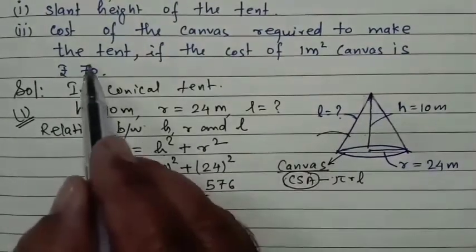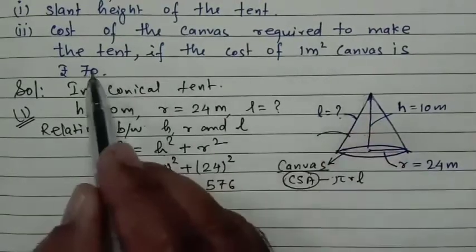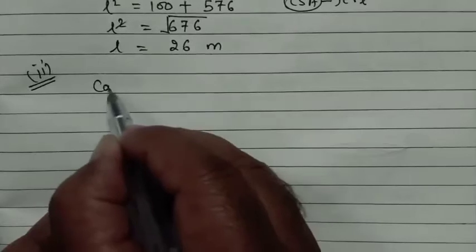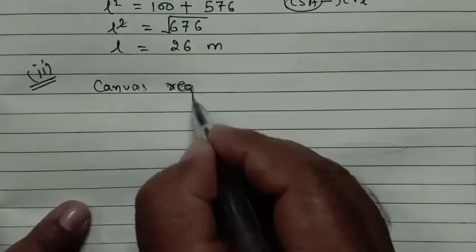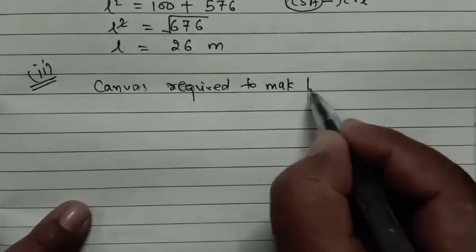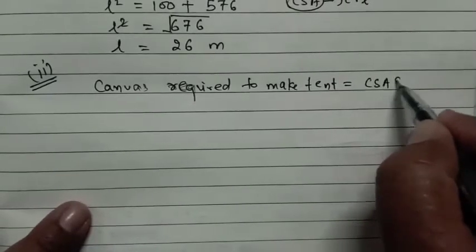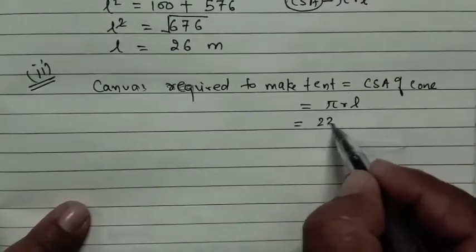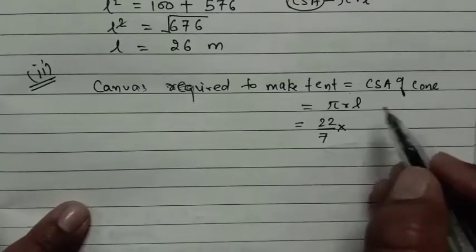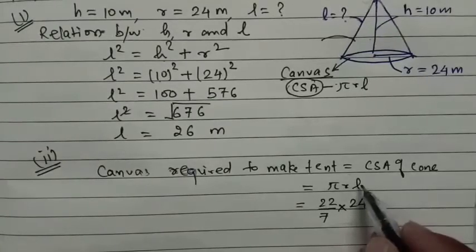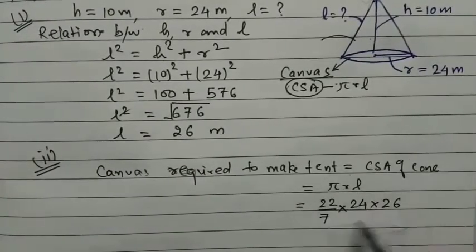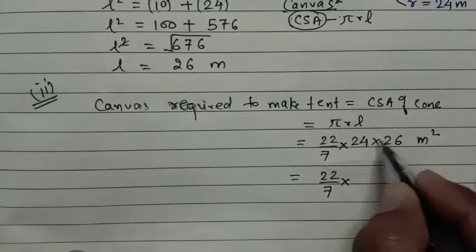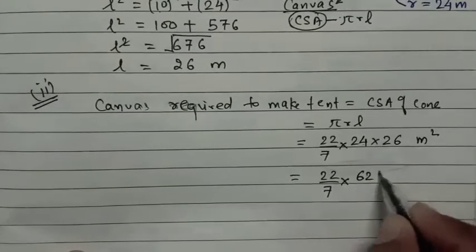First we calculate the CSA, and then we will multiply by 70 because the rate of canvas is ₹70 per meter square. Canvas required to make the tent equals CSA of cone = πrl = (22/7) × r × l. Radius is 24 and slant height is 26, all in meters. So this gives us (22 × 24 × 26) / 7. 24 × 26 = 624 meter square. Then 22 × 624 = 13,728 meter square, divided by 7.